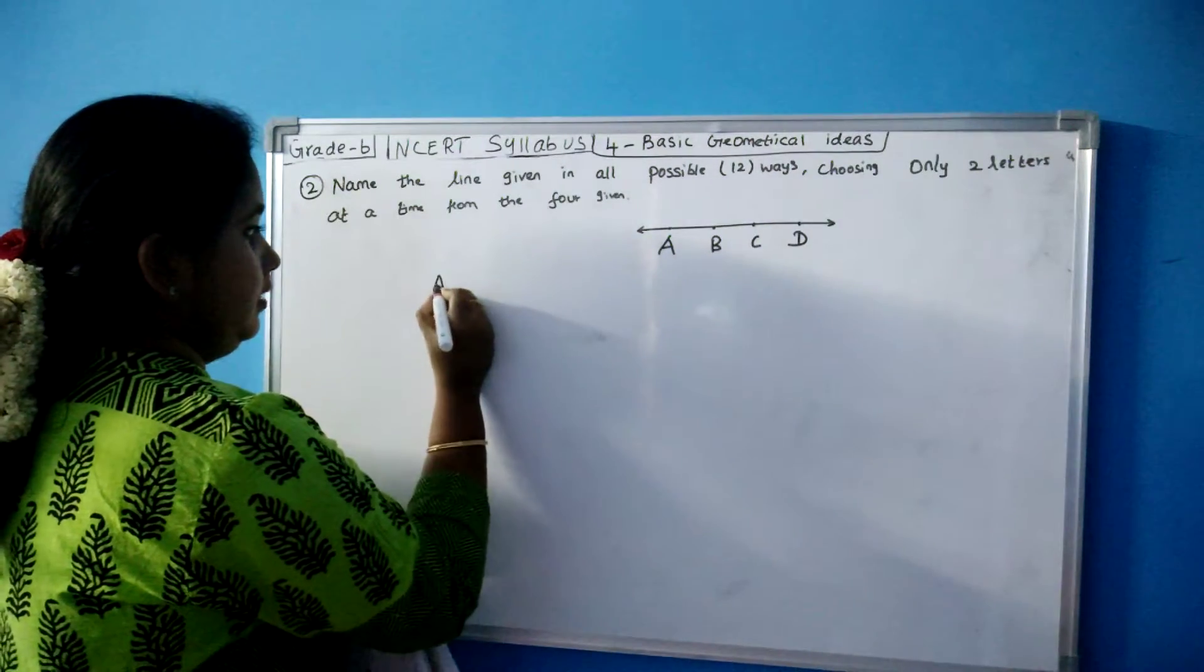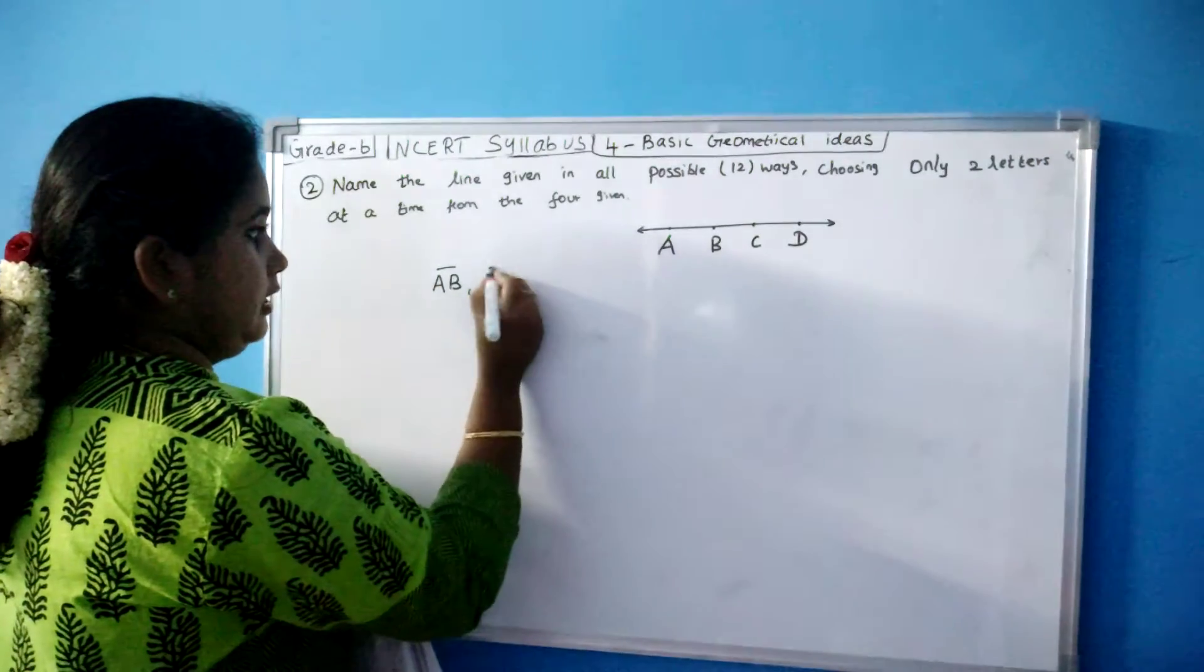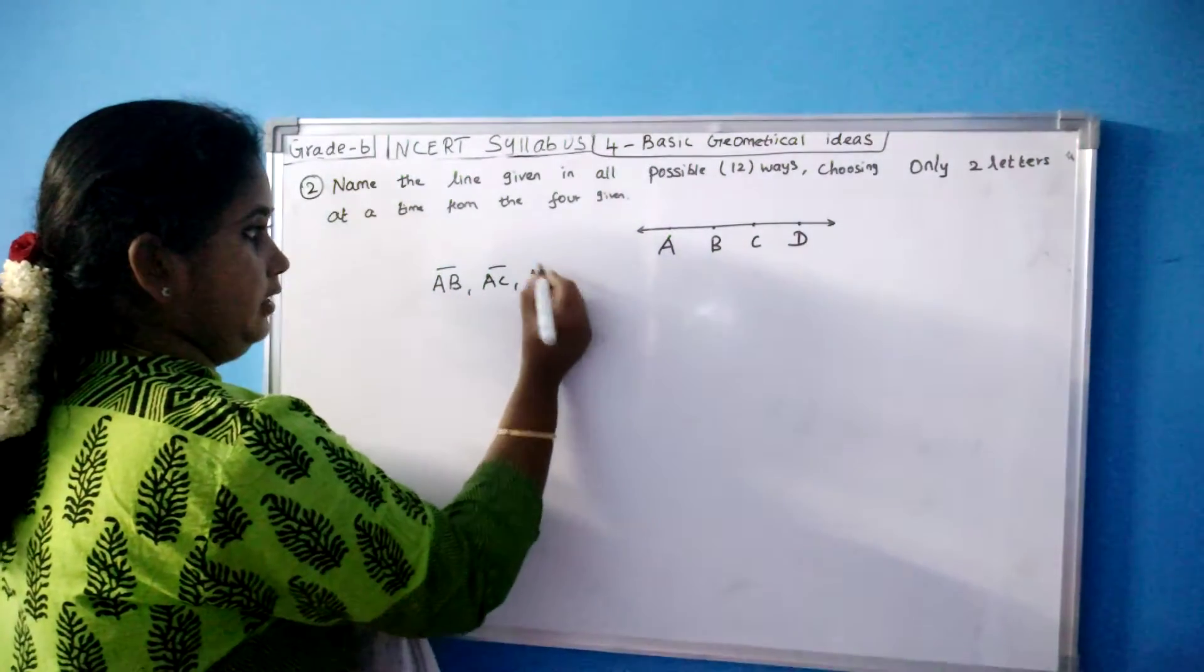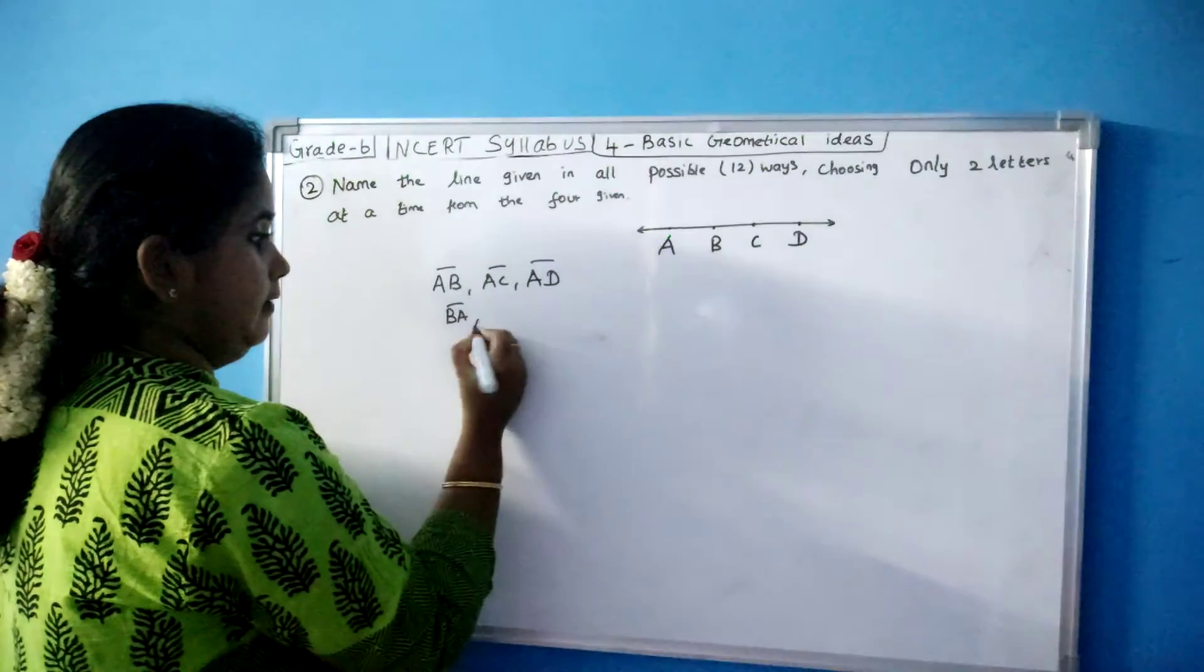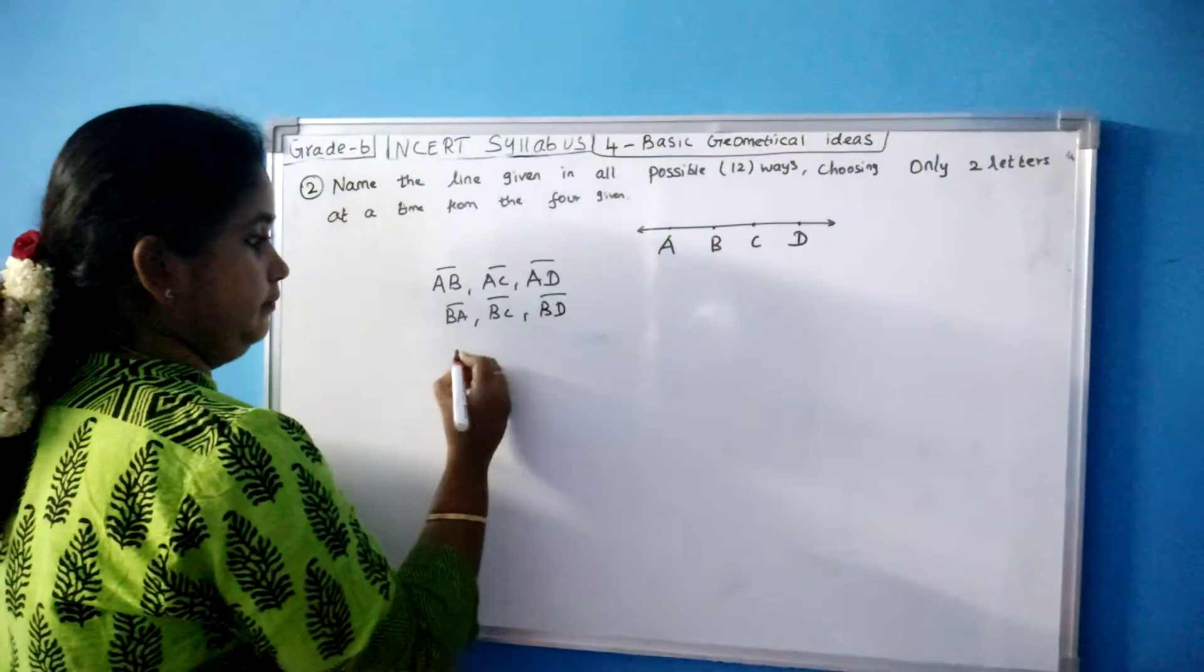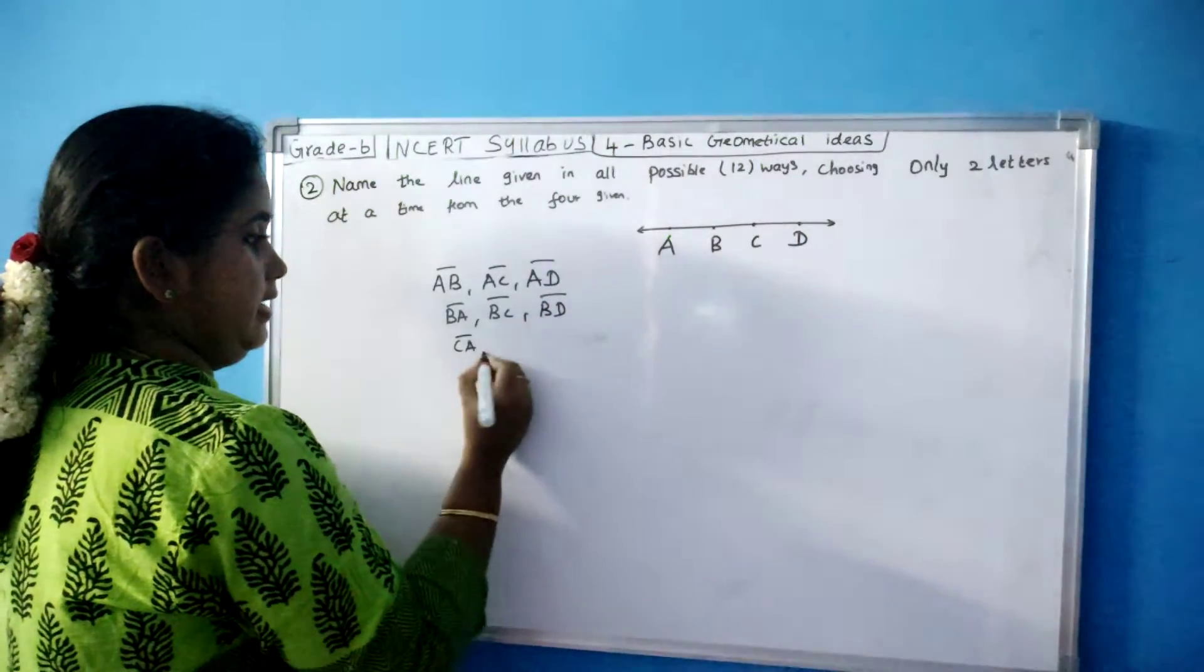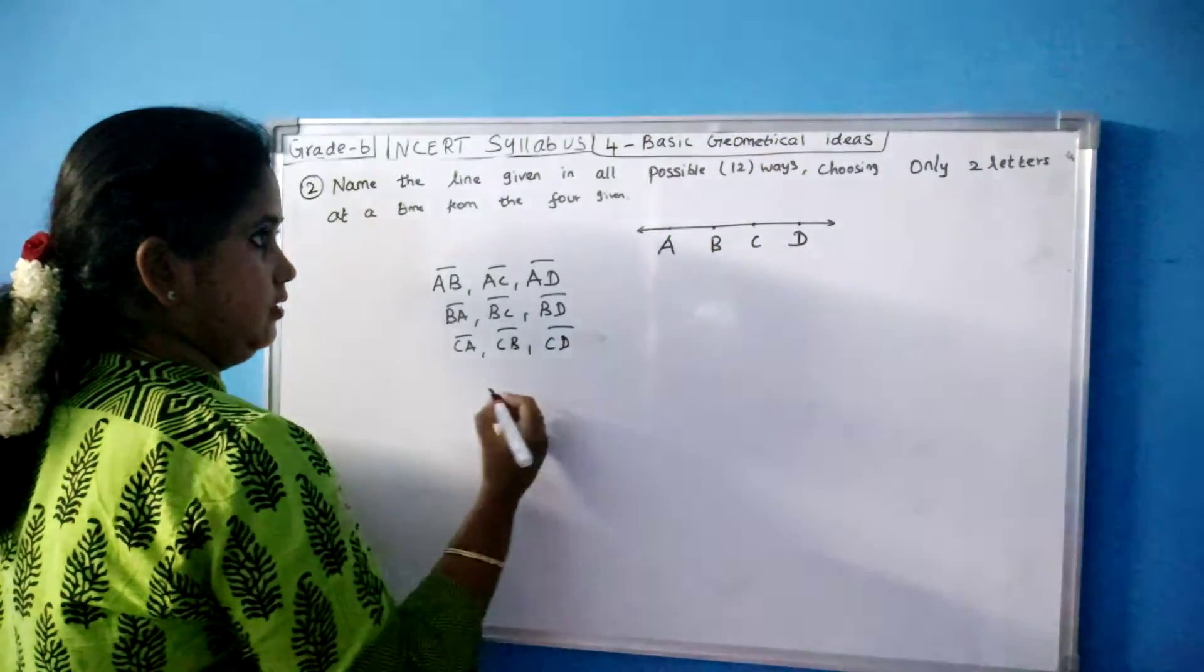So say I am taking A first. AB, AC, AD. Then BA, BC, BD. Then CA, CB, CD.